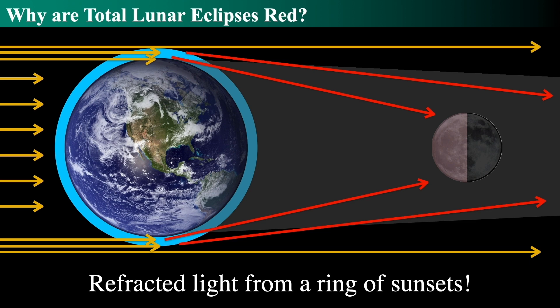And so the answer is because we're looking at the refracted light from a ring of sunsets. If you were on the moon looking up at the earth during a total lunar eclipse, unlike a solar eclipse, because the moon has no atmosphere, during a solar eclipse you see the atmosphere of the sun, which we'll talk about in another video about total solar eclipses.